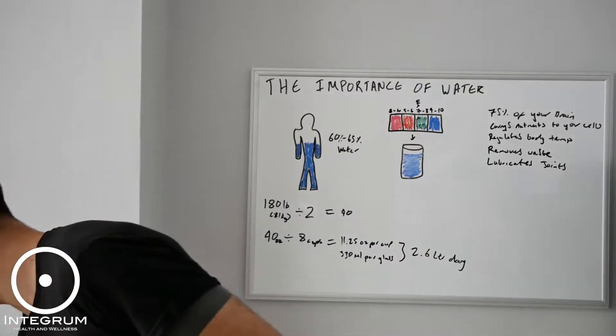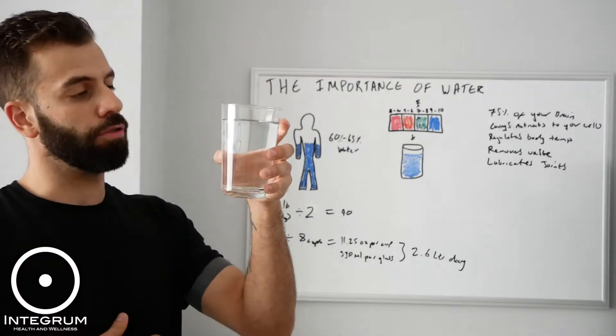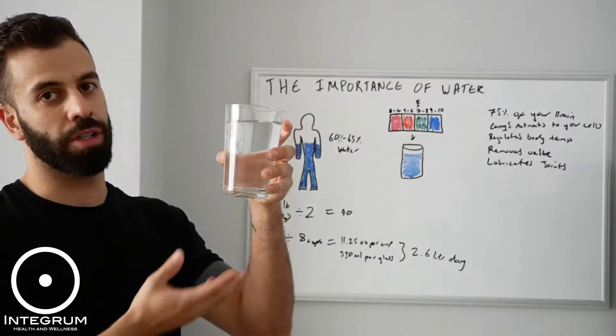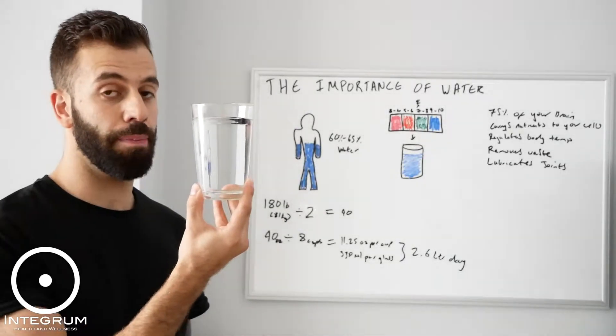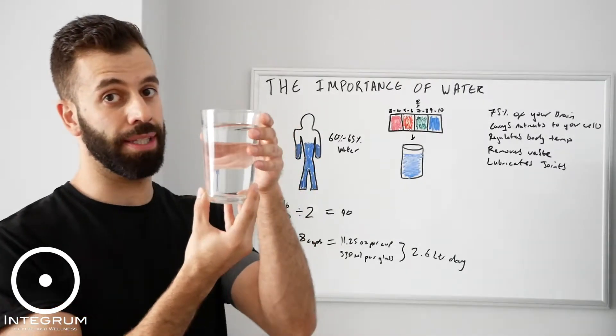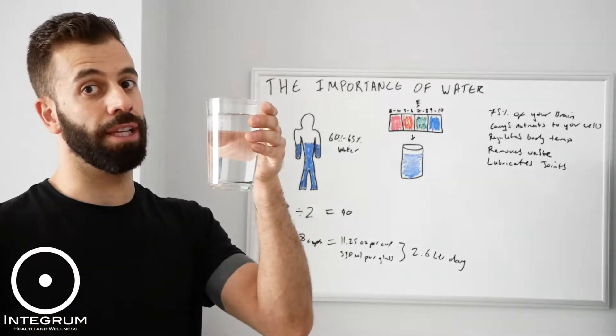So just to give you a bit of an approximation, this is approximately 330 milliliters of water in a pretty typical size drinking glass. So for my body size, my shape, I'd be expected to drink eight of these per day to hit my two and a half liter requirements.